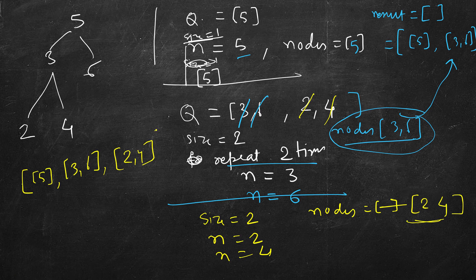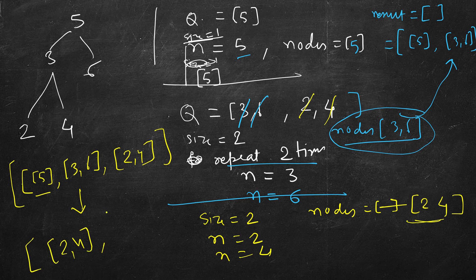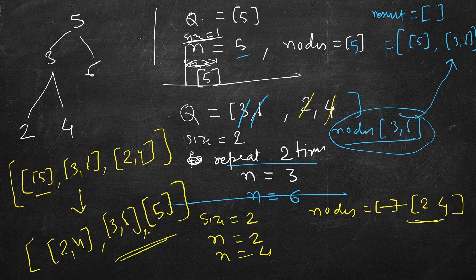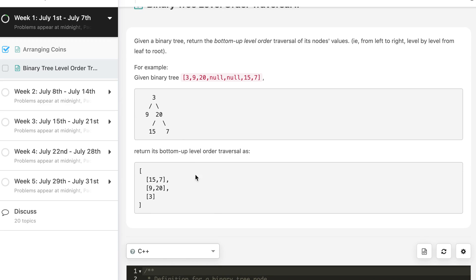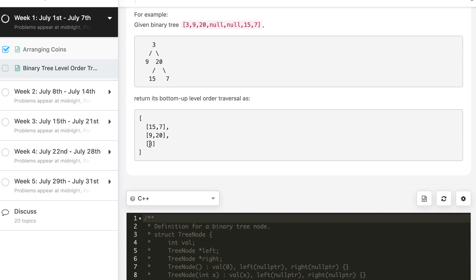We return this list in reverse order. If we were inserting in the beginning it would already be ordered as 2, 4 first, then 3, 6, then 5. Since we inserted at the end, we reverse it to get 2, 4 then 3, 6 and 5. This should be the answer. Let's write the code for this in C++, Java, and Python. One example is given here: 15 and 7 are the last level so they come first, then 9 and 20, and finally root that is 3.